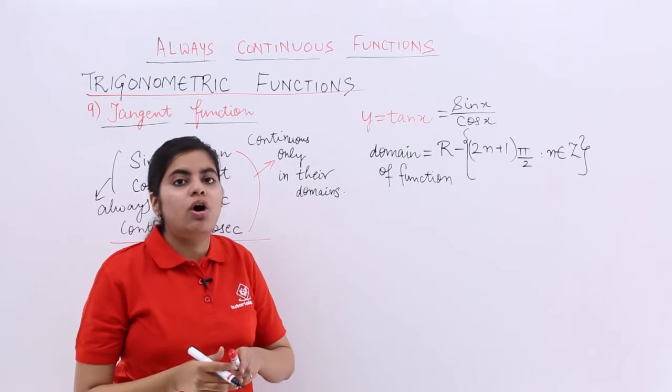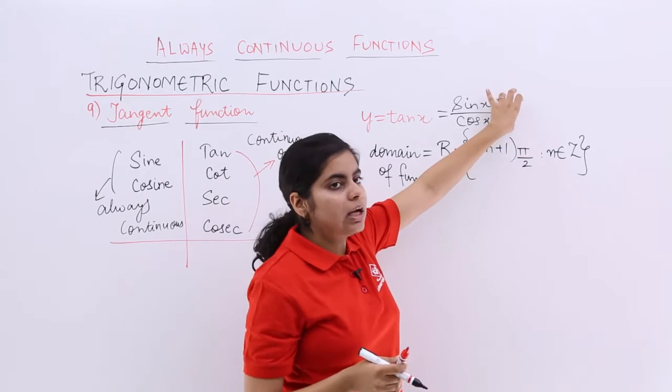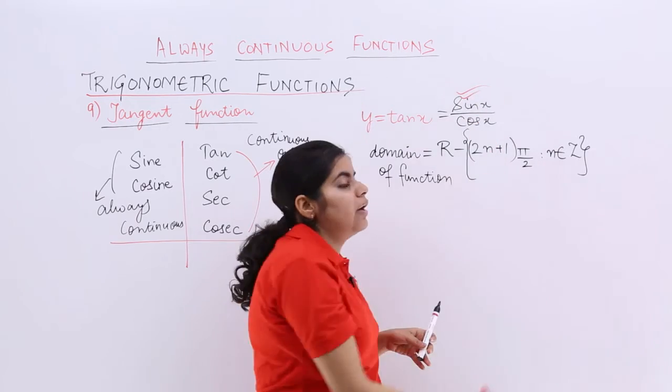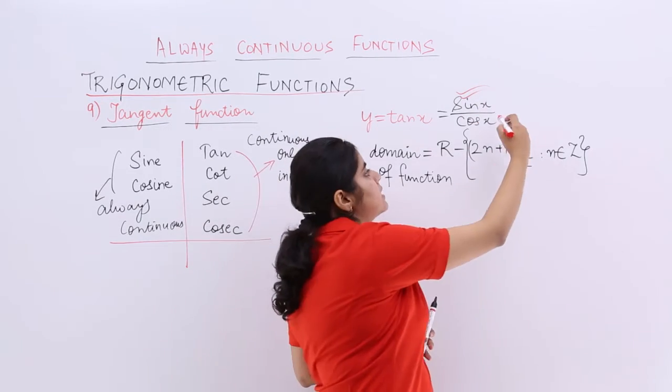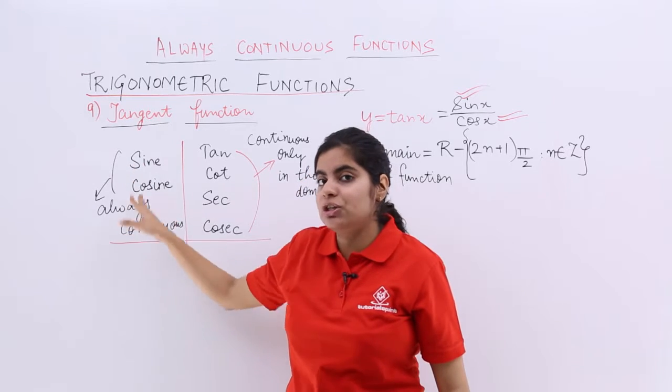Now, that means for proving tan x continuous, I must do something about sine and cos. Sine x I know is continuous everywhere. Cos x I know is continuous everywhere. Always continuous, continuous everywhere.